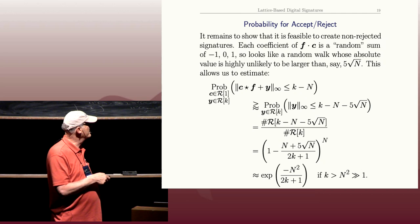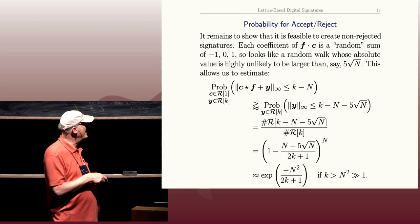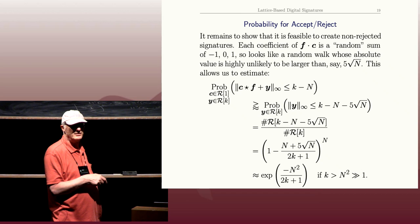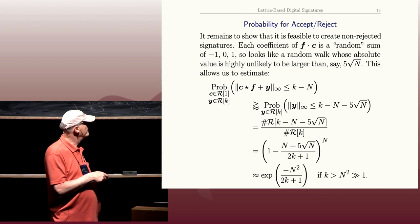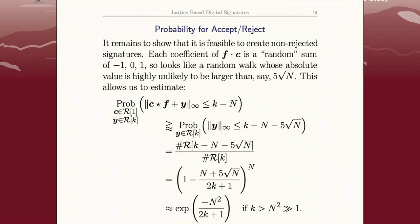And as long as K is bigger than N squared, this will be roughly this. So what one does is one chooses K to be maybe like 5N squared or 10N squared. And then this probability will be very close to 1.